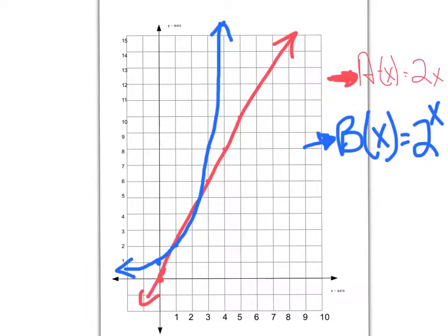A couple of the key points to remember about the differences between A of X, a linear function, and B of X, an exponential. We can start by talking about their slope. If you look at the function A of X, the slope is always a rise of 2, a run of 1. Rise of 2, a run of 1, to give us a slope of 2 over 1.